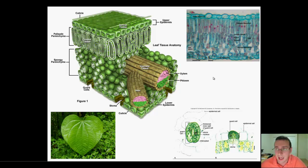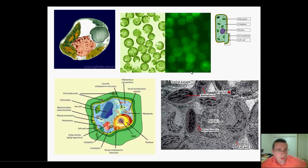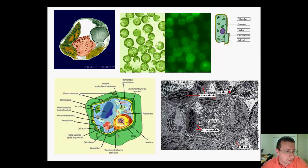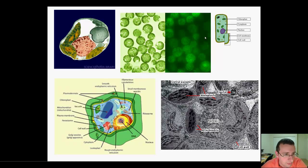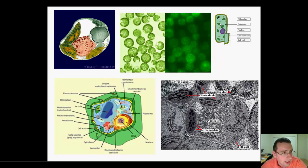Now let's get closer to where the cell photosynthesis is actually happening: the actual mesophyll cells. Mesophyll cells are basically what you see every time you look at diagrams of plant cells, because they are rich in chloroplasts. You see here on the top all the chloroplasts inside the mesophyll cells - thousands and thousands of them. And the diagram on the right side shows how it has a cell wall and chloroplasts inside.